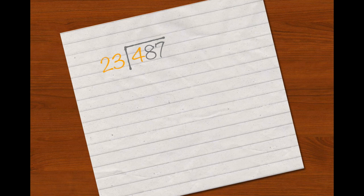23 does not go into 4 so you need to go into the next number which makes 48. You will need to work out how many times 23 can go into 48. A multiplication problem can tell you that 23 goes into 48 twice so you put a 2 above the 8.